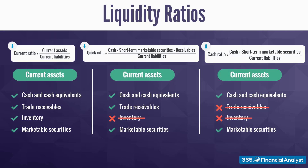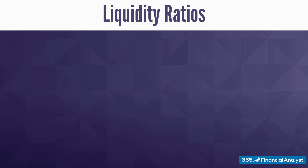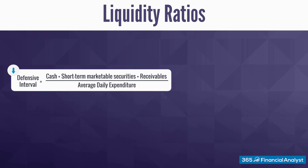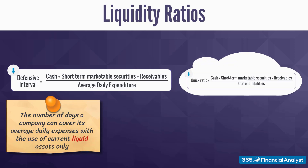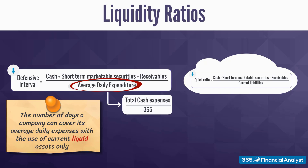Apart from the current, quick, and cash ratios, analysts work with a more comprehensive measure — the so-called defensive interval. It is a widely used indicator that estimates the number of days a company could continue paying its average daily expenditures using its current liquid assets only. We say liquid because we do not include the inventory balance. The numerator replicates that of the quick ratio, but uses average daily expenditure in the denominator instead. To estimate average daily expenses, we take the sum of all cash operating expenses and cost of goods sold and divide by 365 days, excluding any non-cash expenses.